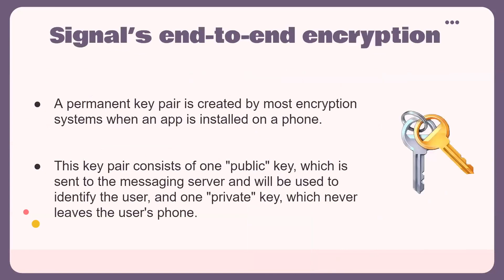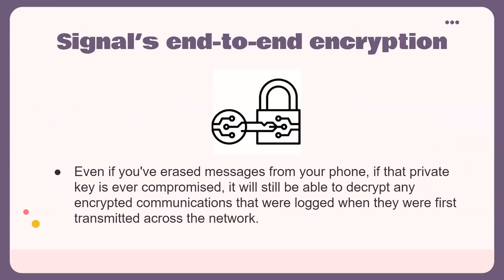For Signal's end-to-end encryption, a permanent key pair is created by the encryption system when the app is installed on a phone. This key pair consists of one public key, which is sent to the messaging server and used to identify the user, and one private key, which never leaves the user's phone. Even if you erase your messages, if that private key is ever compromised it will still be able to decrypt any encrypted communications that were logged when they were first transmitted across the network.